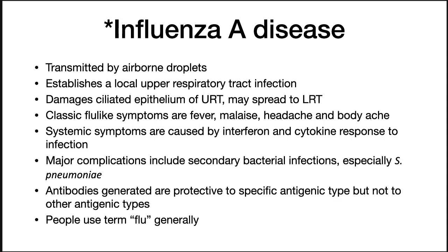Influenza A viral disease is transmitted by airborne droplets. It establishes a local upper respiratory tract infection, then damages the ciliated epithelium of the upper respiratory tract and in serious cases may spread to the lower respiratory tract. You get classic flu-like symptoms: fever, malaise, headache, and body aches. Systemic symptoms are caused by interferon and the cytokine response to infection. Major complications include secondary bacterial infections, especially S. pneumoniae, which can be very dangerous. Antibodies generated are protective to the specific antigenic type of the virus but not to other antigenic types, and this is why you can continue to get the flu.